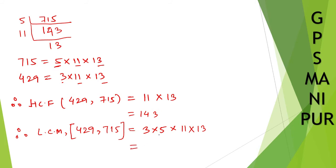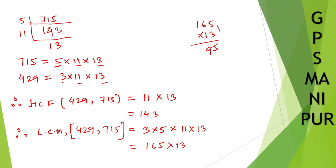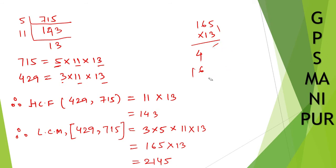Now multiply all these numbers: 3 into 5 is 15, 15 into 11 is 165, 165 into 13. Calculating 165 into 13: 5 times 3 is 15, 6 times 3 is 18, carry 1 gives 19, then 5 times 1 is 5, 6 times 1 is 6, 1 times 1 is 1. So 2145. We got LCM as 2145.